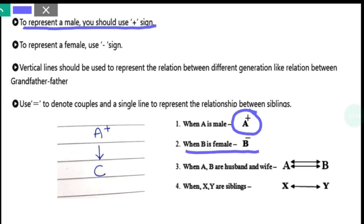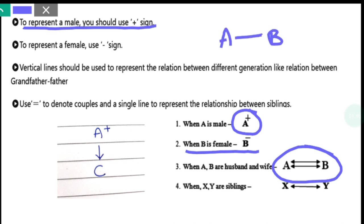If B is female, we will put a minus sign. If A and B are husband and wife, you have to represent them with a double line. If there is a sibling relationship, you will represent them with a single line.